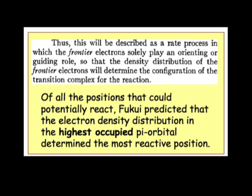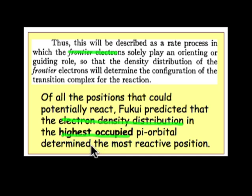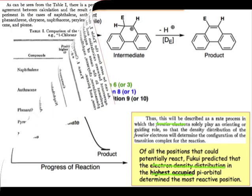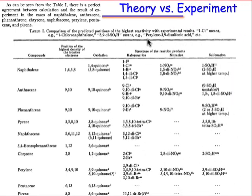Fukui recognized that and described the reaction as a process in which the frontier electrons and their electron density play the guiding role in governing which of these transition states is most easily crossed. In particular, he said it was the electron density distribution in the highest occupied pi orbital that determines the most reactive position. That makes sense because the highest occupied pi orbital is associated with the pi nucleophile of this rate-determining step.